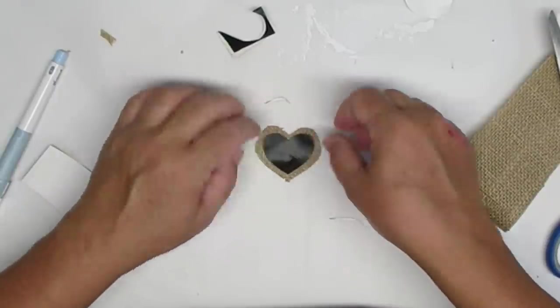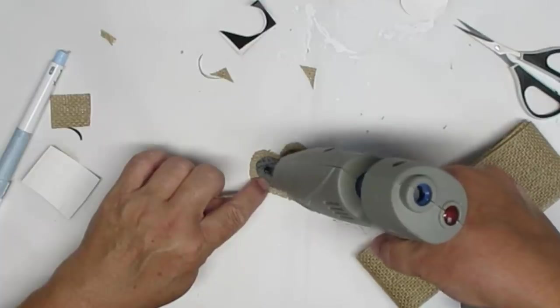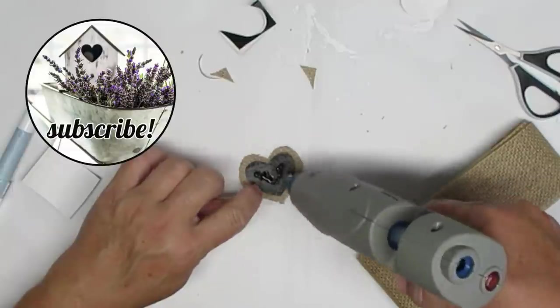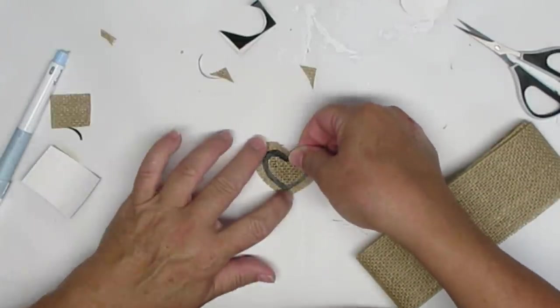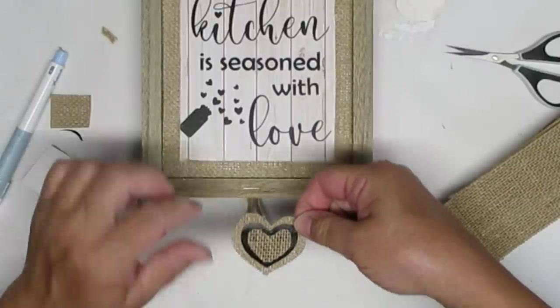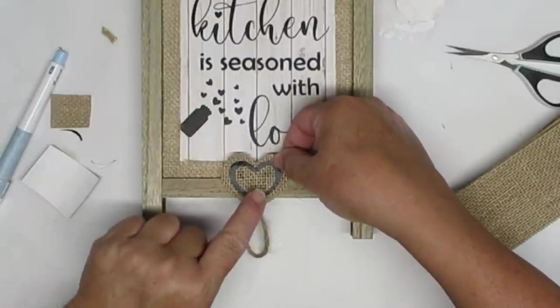Then I cut out another little burlap heart and hot glued it onto the first two. My idea for these little hearts was to glue them onto the front of the easel but down towards the bottom so it wouldn't get in the way.